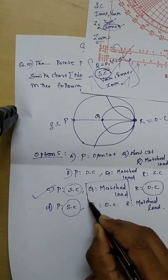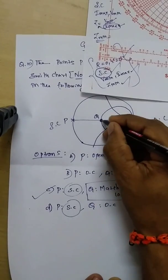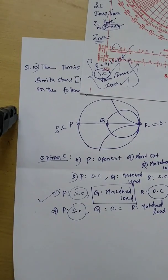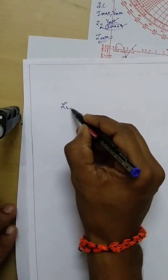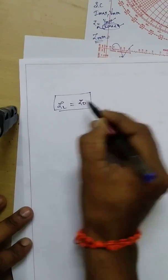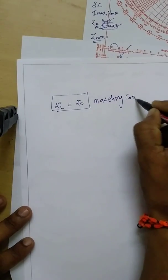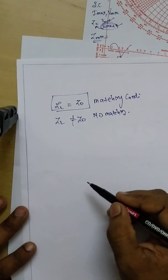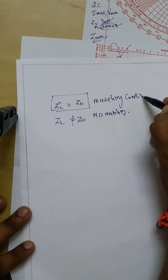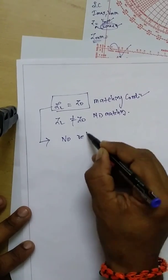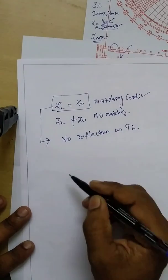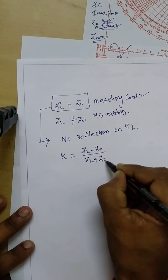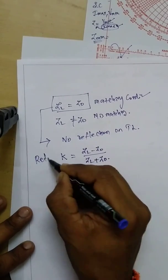But let us take a quick review on the Q point — how do we say that Q point is a matched load? We know that the matching condition on a transmission line is simply when your load impedance ZL equals the characteristic impedance Z0. When these two are not equal, it is called a mismatching condition. When we have a matching condition, there will be no reflection on the transmission line. The reflection coefficient is equal to (ZL minus Z0) divided by (ZL plus Z0).